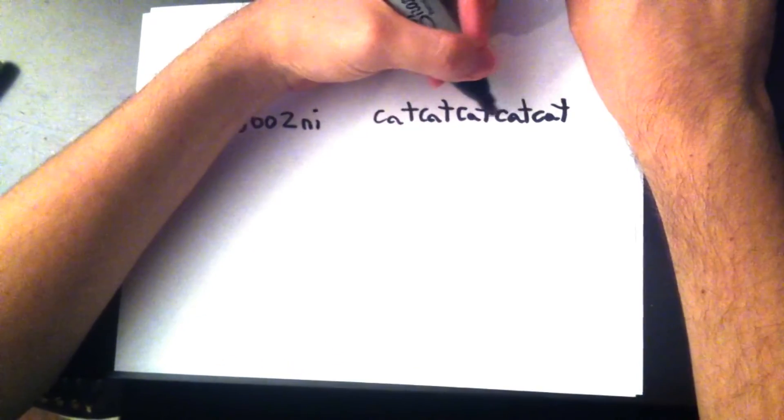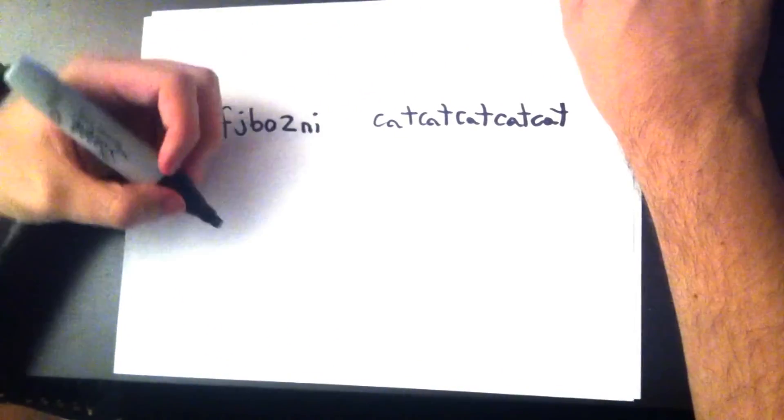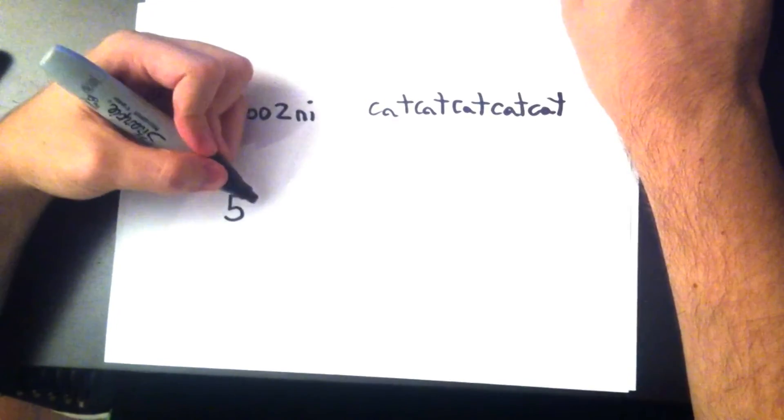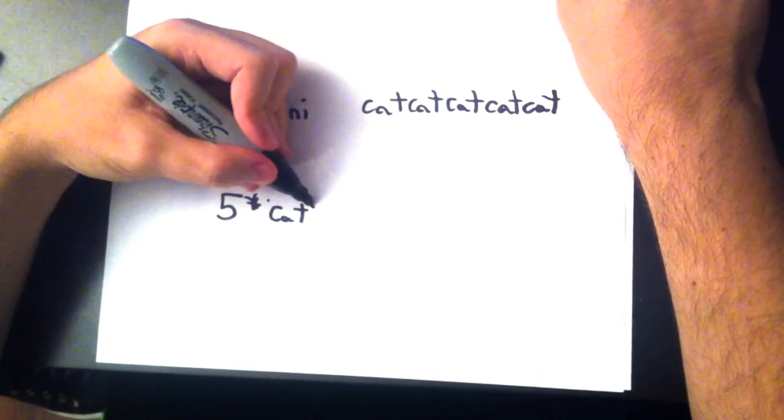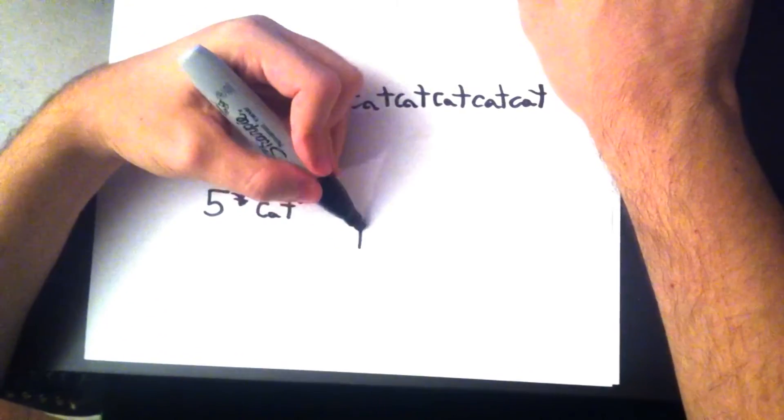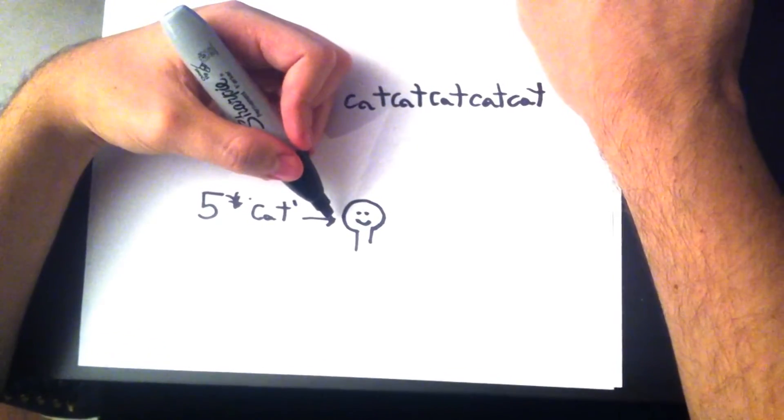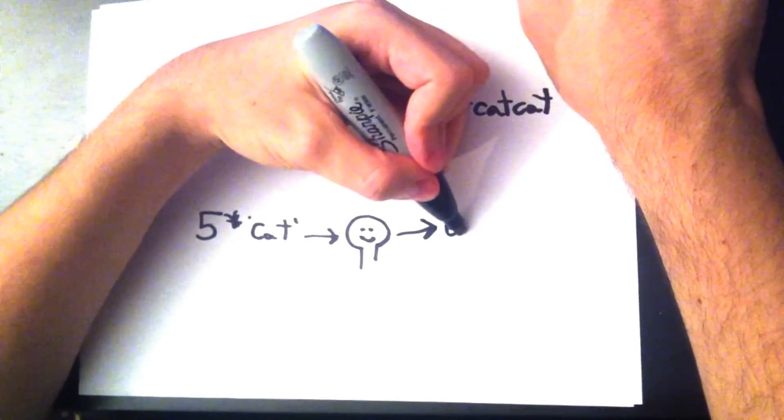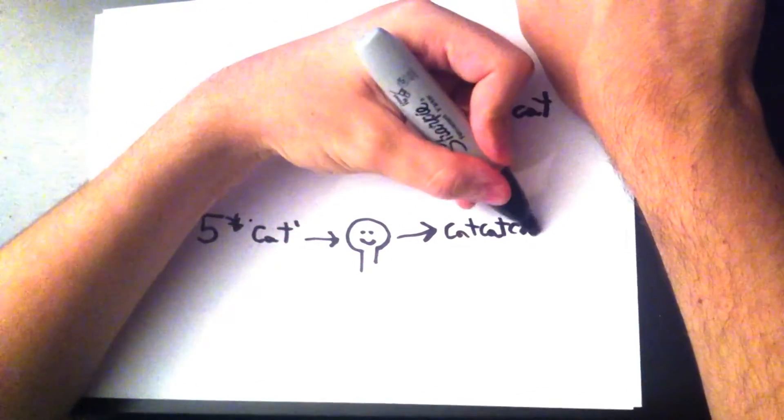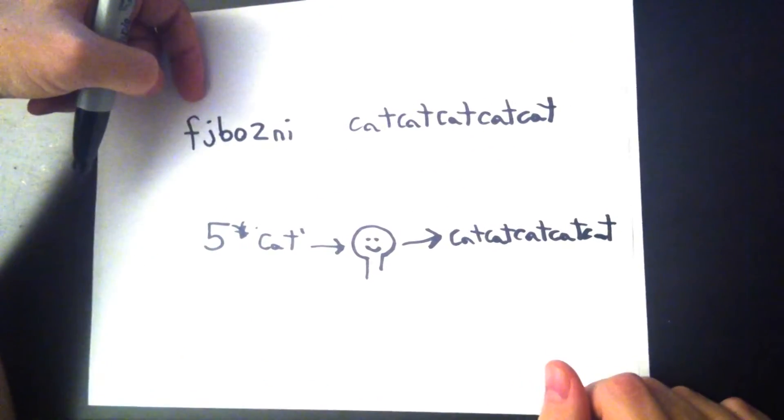F-J-B-O-Z-N-I has more information packed into it than the string of five cats, and so it makes sense that its Kolmogorov complexity should be higher. And we can see that the sequence of cats has a much smaller K than its length. We could describe it as five times cat, or five times C-A-T, and easily conceive of a person or computer that understands it as write cat five times.